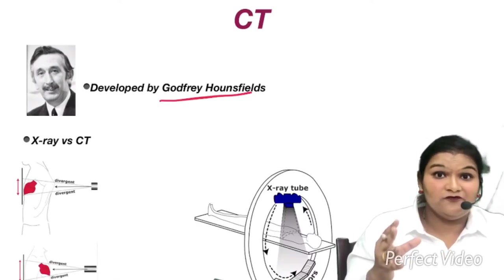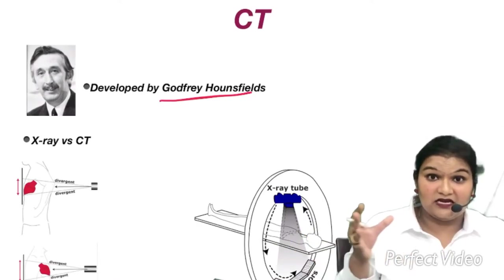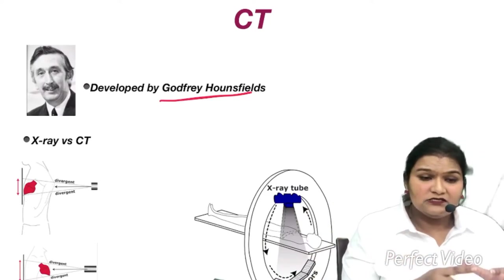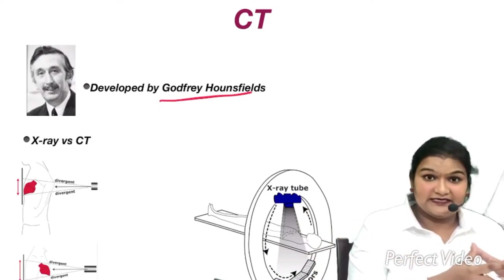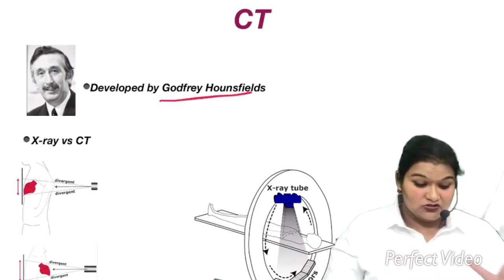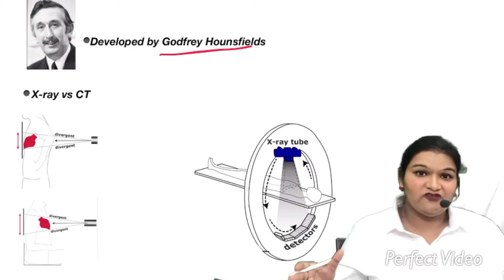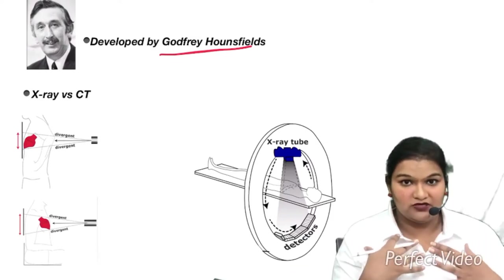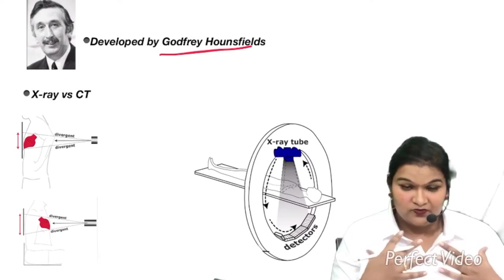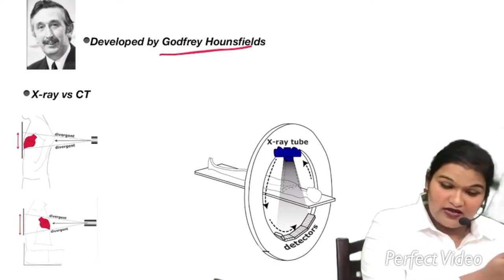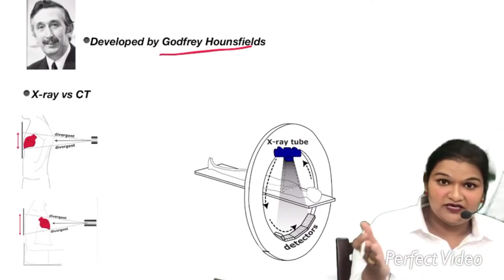Before starting with what do you mean by CT scan and how CT scan is done, what is the principle and how you are going to read, let us first see what is the difference between X-ray and CT scan. X-ray is basically a 2D image of a 3D structure. Our human body is a 3D thing and X-ray is one two-dimensional thing, so we get a two-dimensional or 2D print of a 3D body.